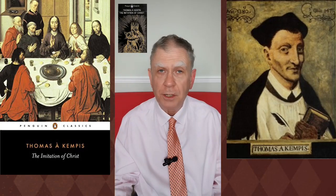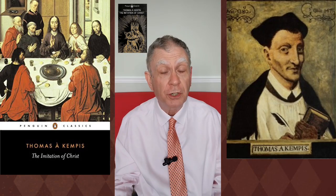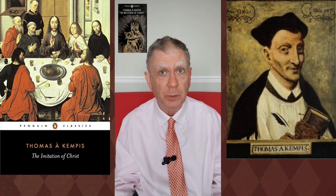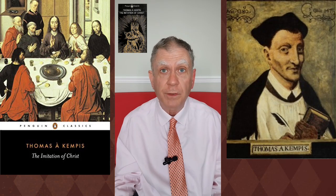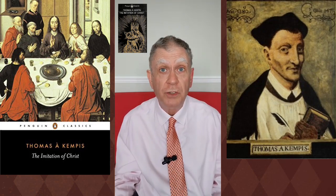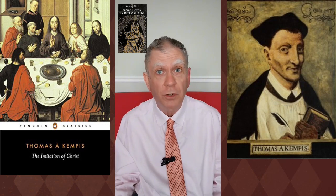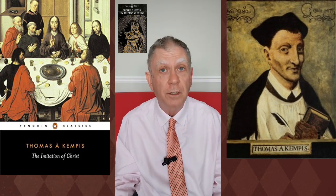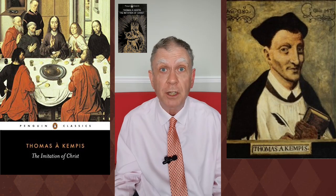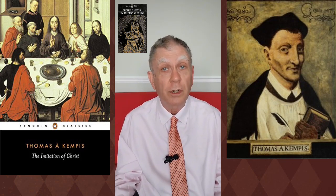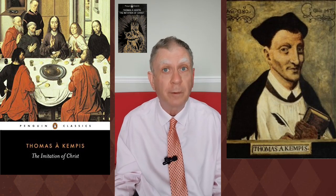The Imitation of Christ was a Christian devotional work written probably by the German-Dutch priest Thomas Akempis, although it was originally published anonymously in the first quarter of the 15th century. Thomas was a member of a religious movement called Devotio Moderna — literally 'modern devotion' — which had begun in the Netherlands about 50 years earlier and which emphasised piety, humility, and simplicity. It died out shortly after the beginning of the Protestant Reformation.